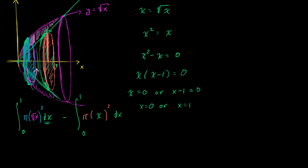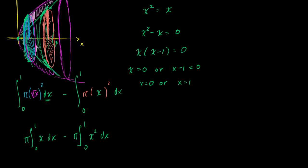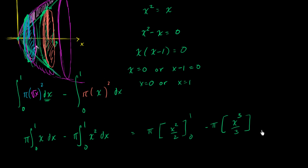The volume of our truffle with the cone carved out is this integral minus the inner integral. We can factor out pi from both. This equals the definite integral from 0 to 1 of pi times x dx (since square root of x squared is x), minus the integral from 0 to 1 of pi times x squared dx. This gives pi times the antiderivative of x, which is x squared over 2, evaluated from 0 to 1, minus pi times x to the third over 3 evaluated from 0 to 1.